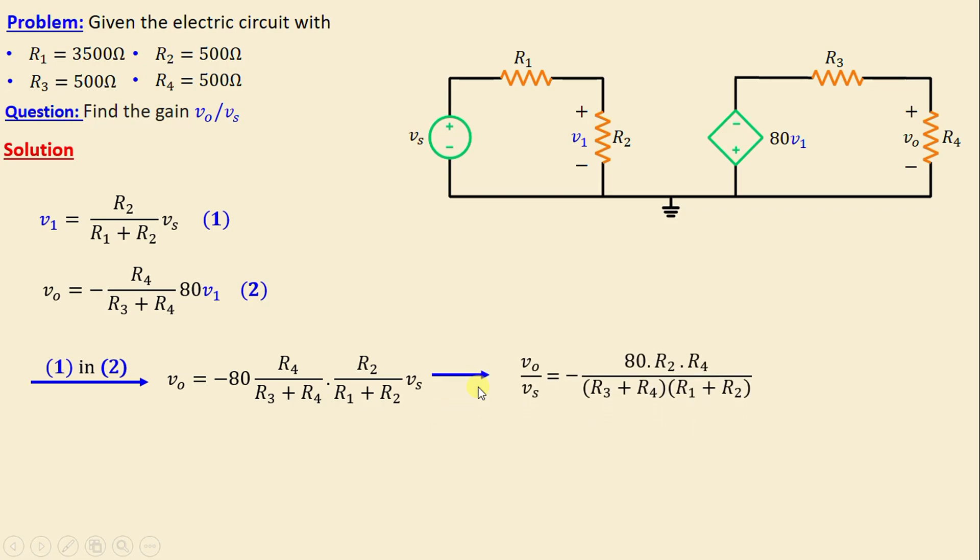From here, we can obtain the gain vo/vs = -80R2R4/[(R3 + R4)(R1 + R2)]. Let's move on now to the numerical application.